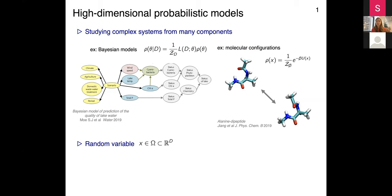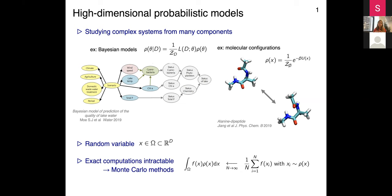The notation for the random variable we are interested in is going to be x throughout the talk, and it will live in dimension d. Most of the time, computing any expectation with respect to this random variable is going to be intractable. The method of choice is to use Monte Carlo methods to approximate those expectations - replacing the integral by the sum over samples obtained from the high-dimensional distribution.